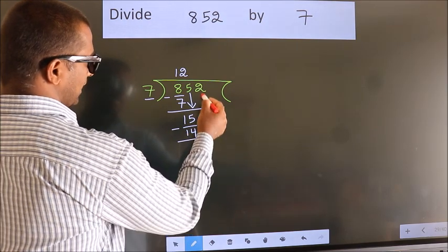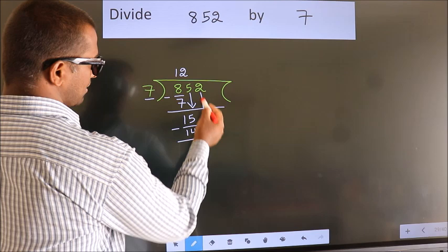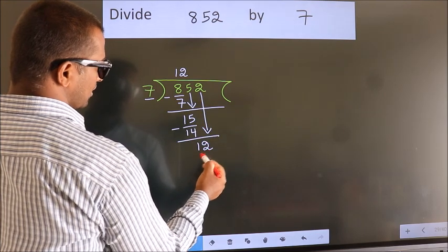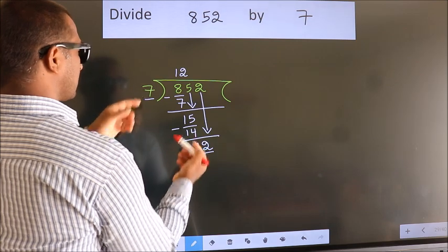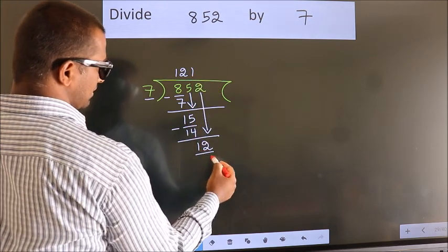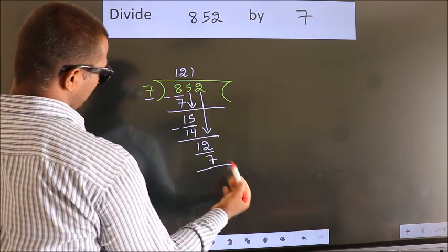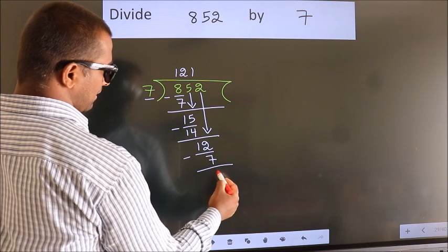After this, bring down the beside number. So, 2 down. So, 12. A number close to 12 in 7 table is 7 once 7. Now, we subtract. We get 5.